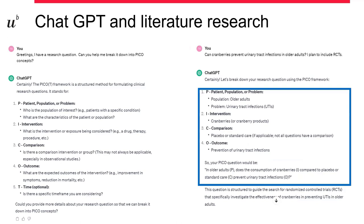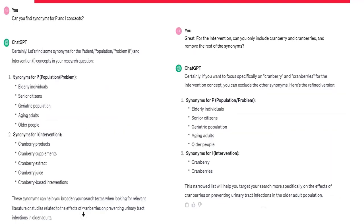Here's an example I've done. First I tell ChatGPT, 'I have a research question — can you help me break it down into concepts?' I'm going to show you from PICO and then to a search strategy. Automatically, it provides me with all of the main elements, so I have a clear idea of how potentially my question will be broken down. On the right-hand side, I provide my question: 'Can cranberries prevent UTIs in older adults?' And here you can see it does a really nice job of breaking down into the concepts. Then I need to identify synonyms and keywords. I ask ChatGPT specifically: 'Can you provide synonyms for the P and the I concepts?' and it lists all the different concepts.